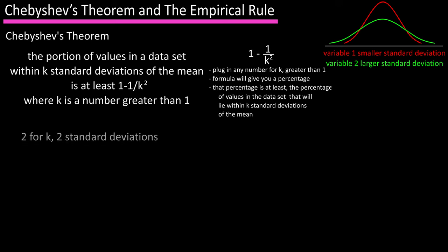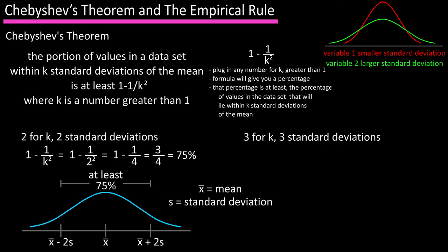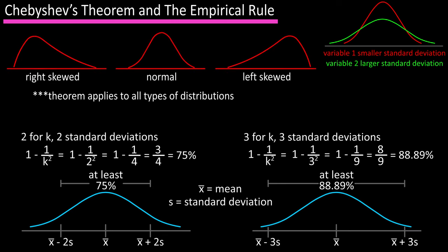For example, if we plug in 2 for k — two standard deviations from the mean — the formula gives us 75 percent. So at least 75 percent of the values in the data set will lie within two standard deviations of the mean. And for k equals 3, three standard deviations from the mean gives us 88.89 percent. This theorem can be applied to any distribution regardless of its shape.